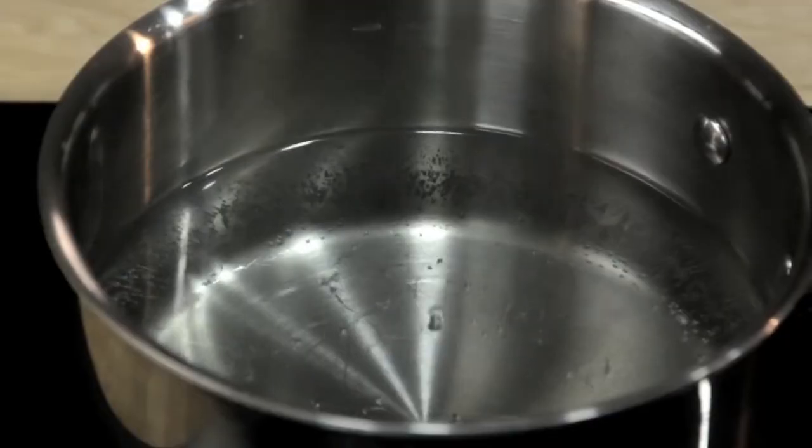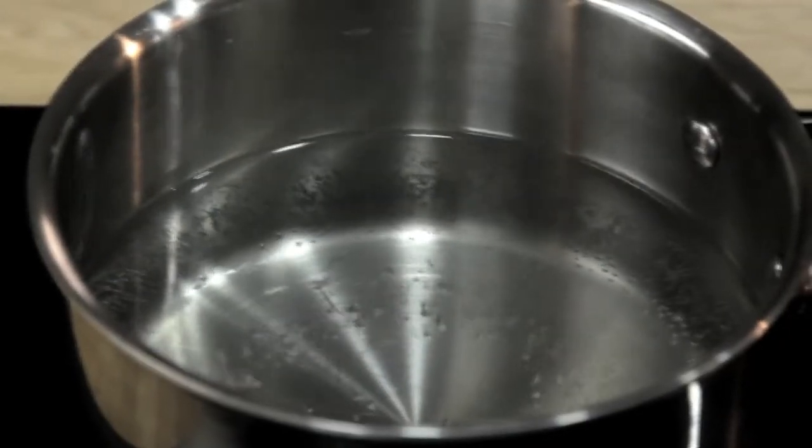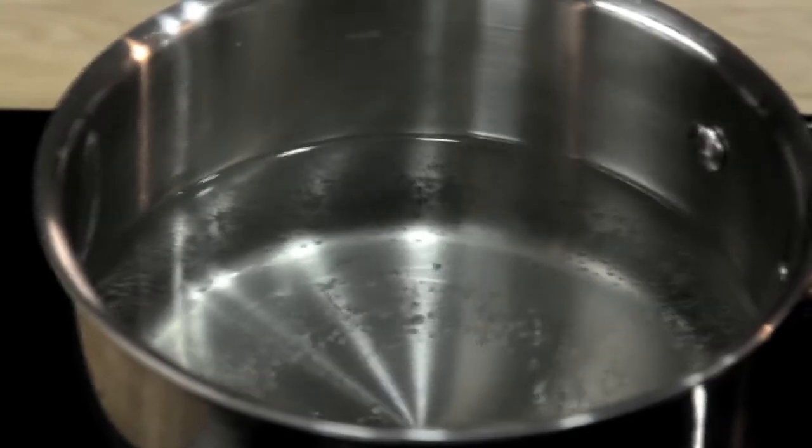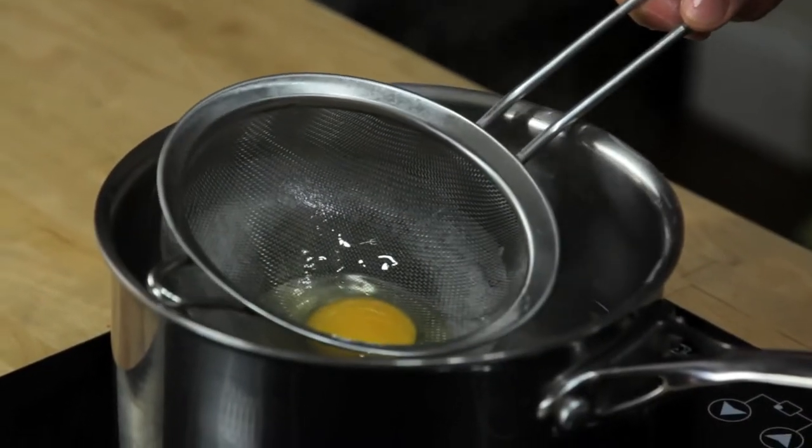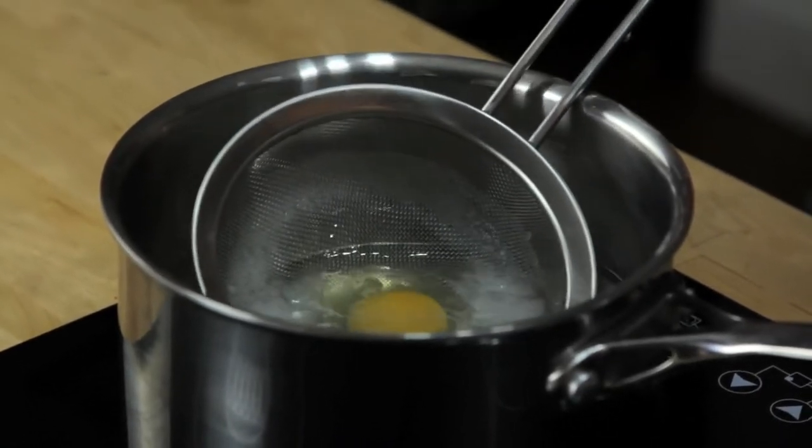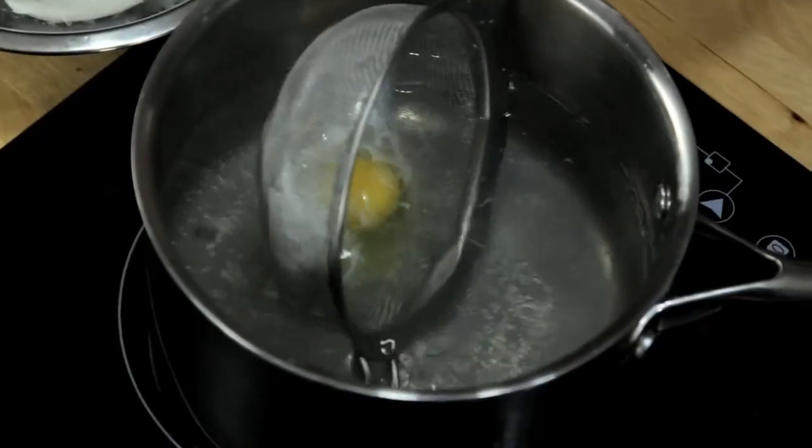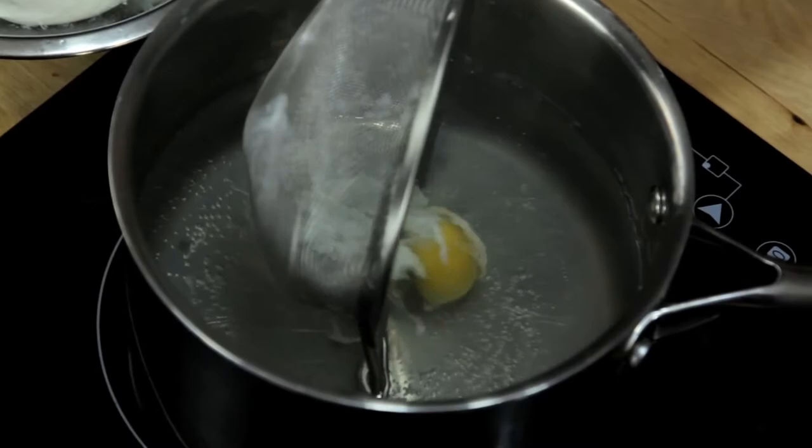Even better is that the strainer is actually the ideal tool for lowering the egg into the water. What I've got here is a pot of water at 180 degrees Fahrenheit, which is just about the temperature that the water is quivering but not quite simmering yet. All I'm going to do is gently lower the strainer with the egg into the water, move it back and forth a little bit to make sure the egg isn't stuck, and then carefully roll the egg out.